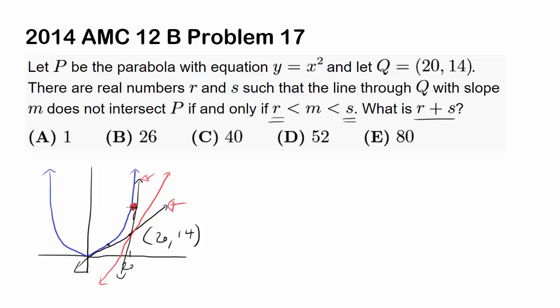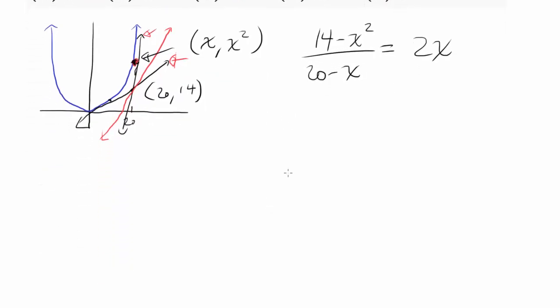Let's say the point of tangency is (X, X squared). It lies on the parabola, so the Y value is going to be X squared. The slope of the line through (20, 14) and this point is going to be (14 minus X squared) divided by (20 minus X). You want this to equal to the slope of tangent line of the parabola at X using calculus. That's 2X, differentiating X squared.